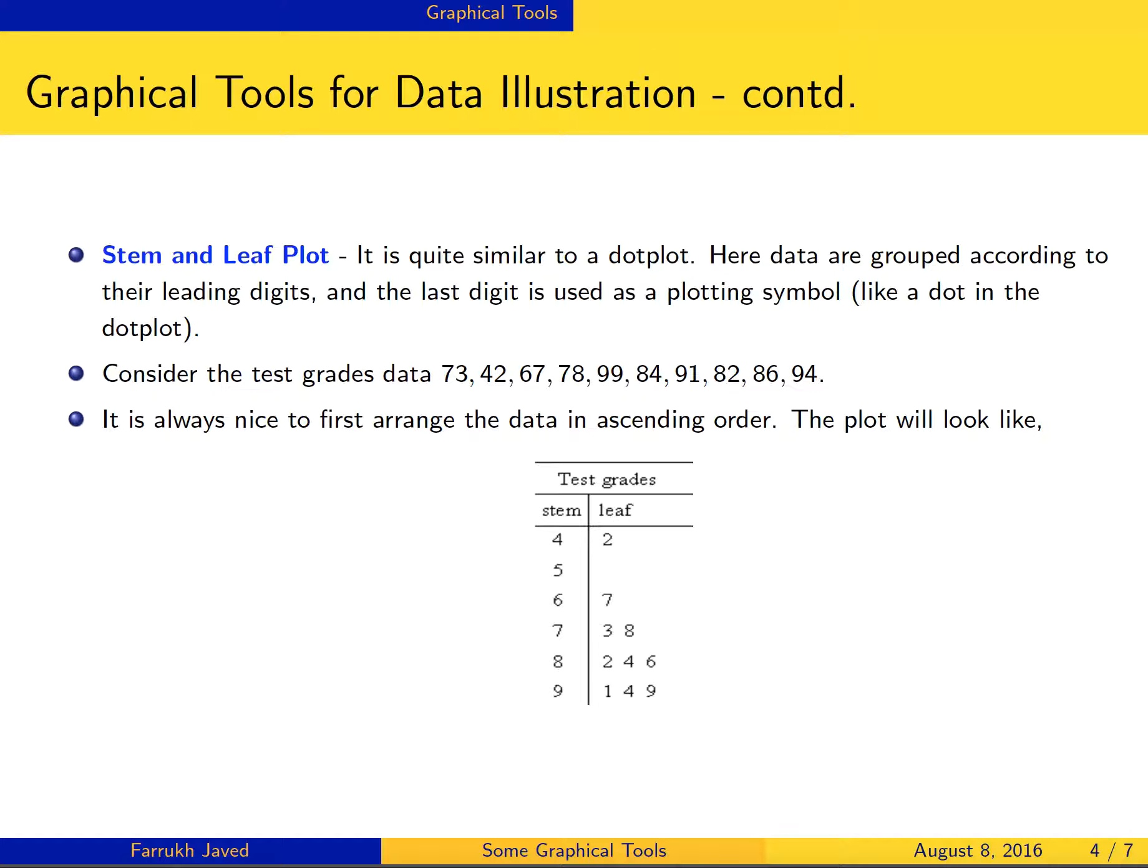With 6, I can see 67. With 7, I can see 73 and 78. With 8, I can see 82, 84, and 86. With 9, I can see 91, 94, and 99. We plot them and make a curve to see if we see anything. Sometimes it's obvious, sometimes not. If it's not obvious, we move on to other options.